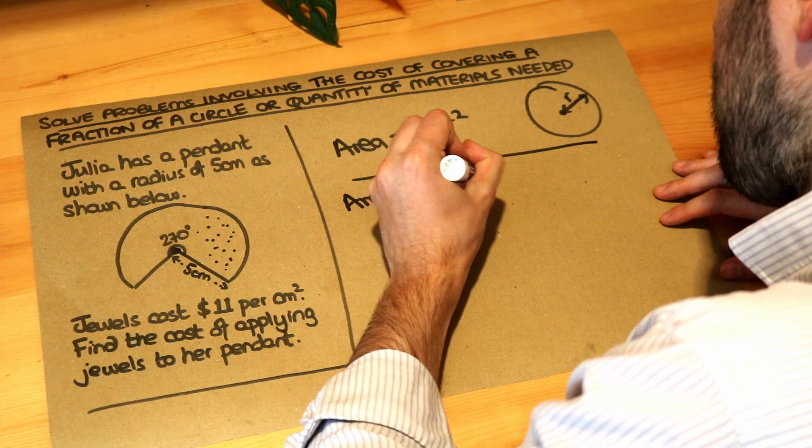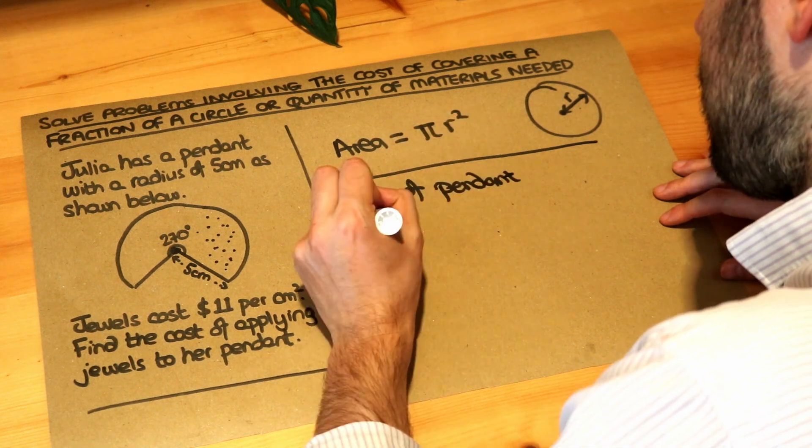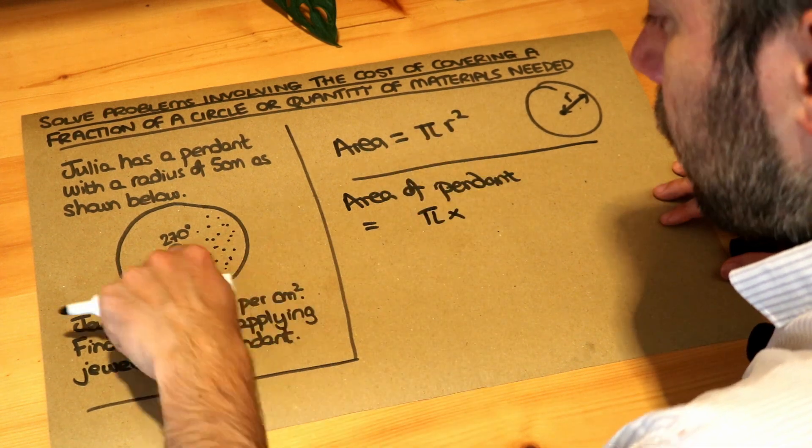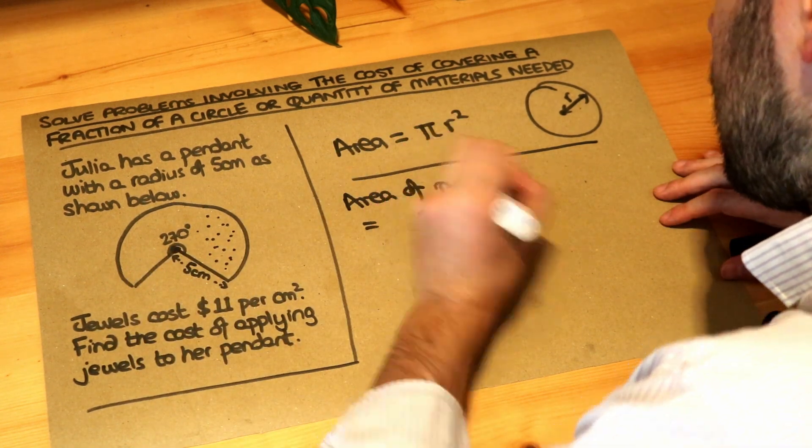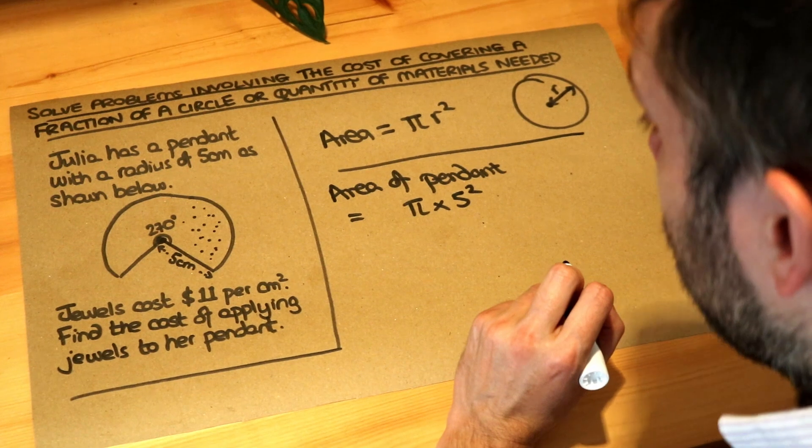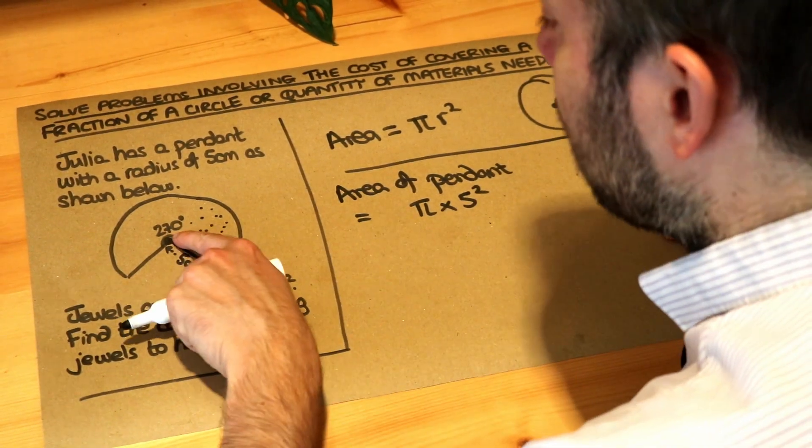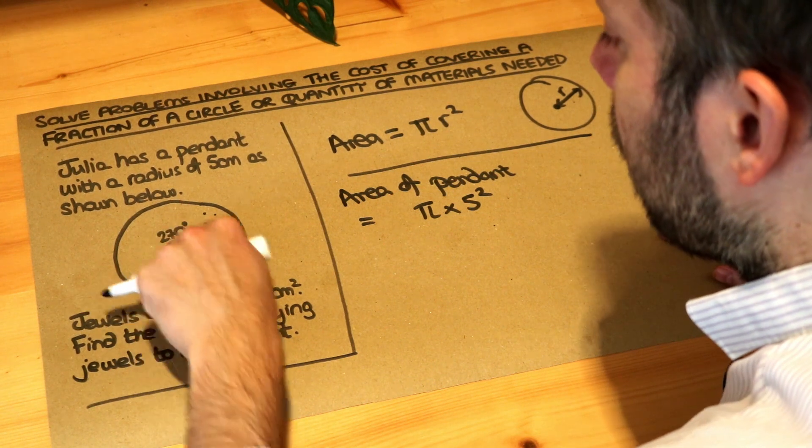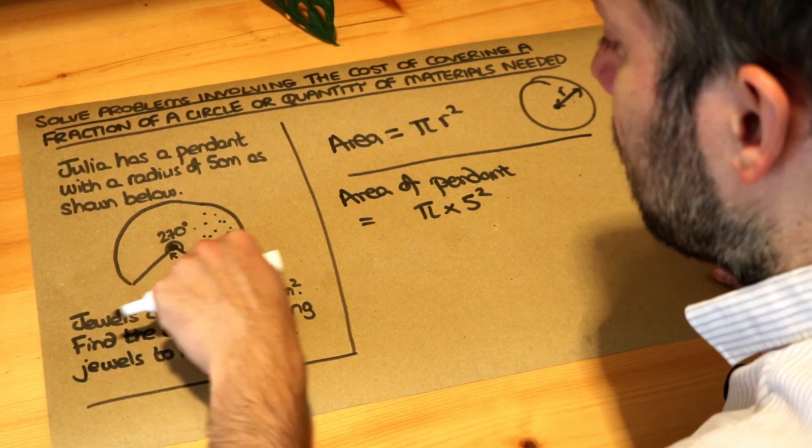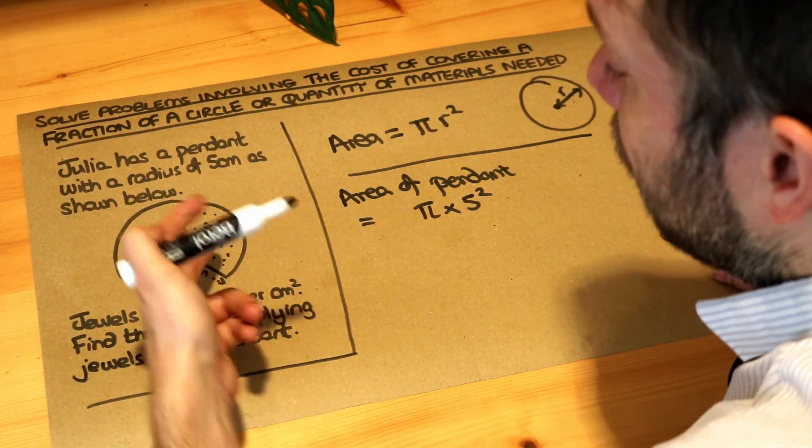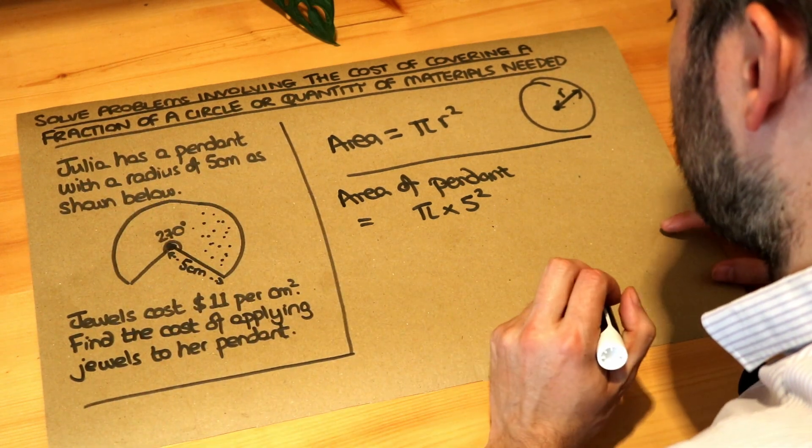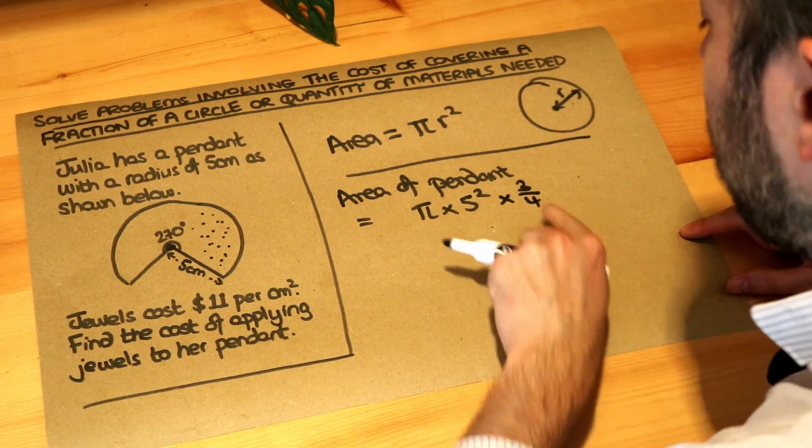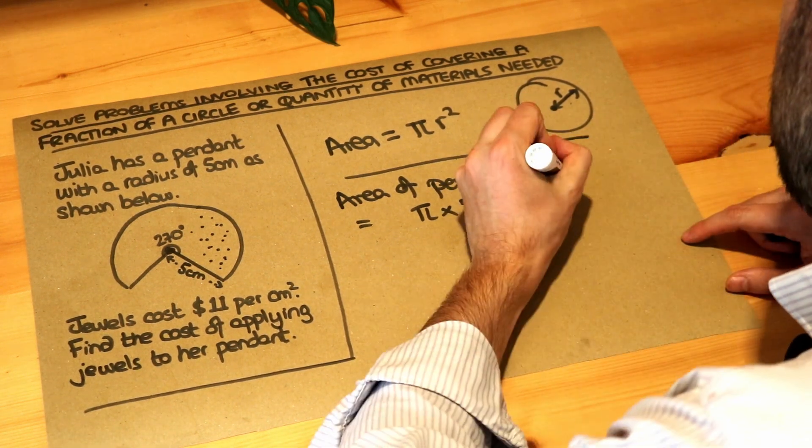We've got π times the radius squared, so the radius is five, so five squared. Now what fraction of a circle do we have? Well it's 270 degrees, that's three quarters of 360 degrees which would be a full spin. And if you just look at it you can see it's three quarters of a circle. So we need to times this by three quarters to find just three quarters of the area of a full circle.